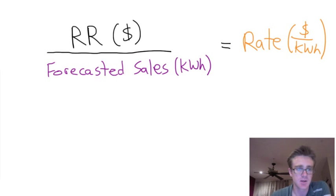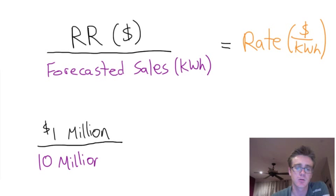Let's take an example. Let's say that for an electric utility, they have a revenue requirement of one million dollars. And let's just say that they expect that in the next year, they're going to sell 10 million kilowatt hours of electricity. So, just do the math and we find that they have a rate of 10 cents per kilowatt hour.